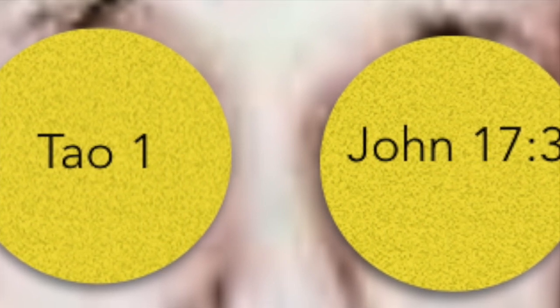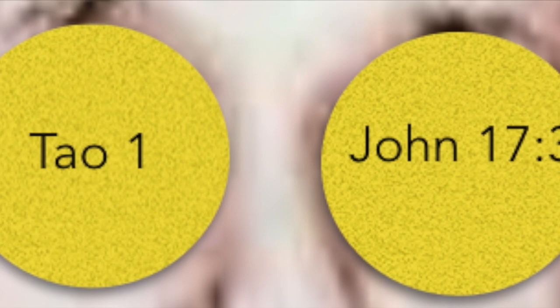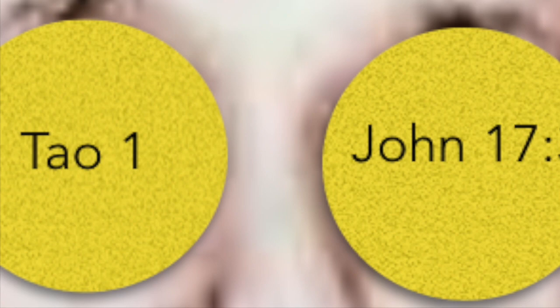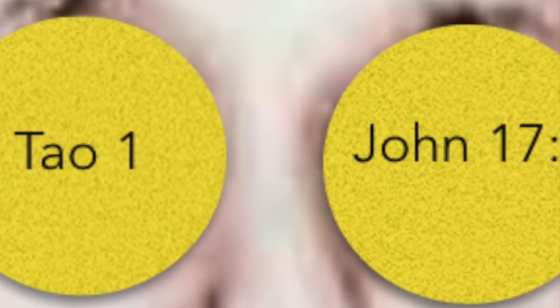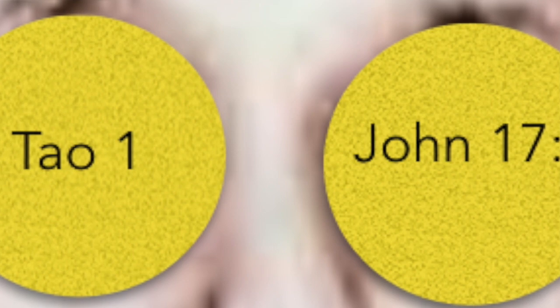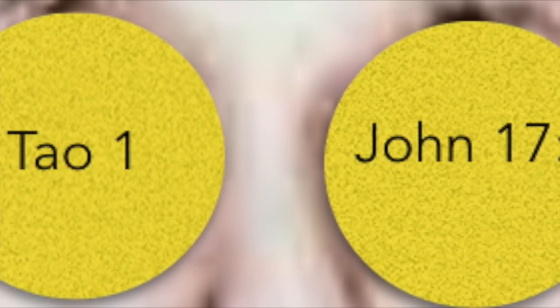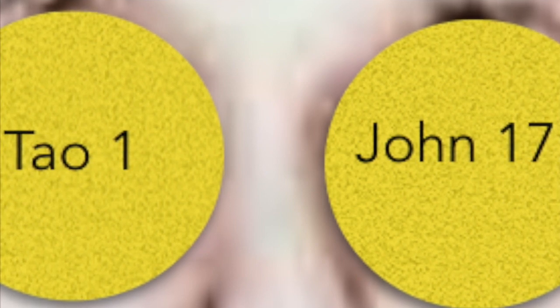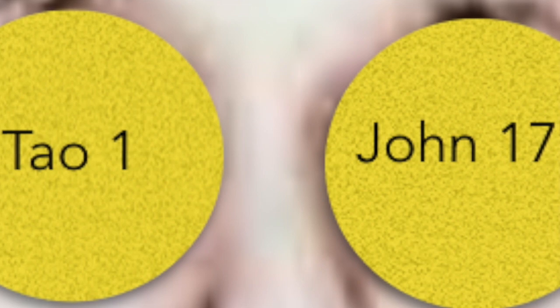End of Chapter Five. Five colors blind the eye, five notes deafen the ear, five flavors make the palate go stale. Too much activity deranges the mind, too much wealth causes crime. The master acts on what she feels and not what she sees. She shuns the latter and prefers to seek the former.